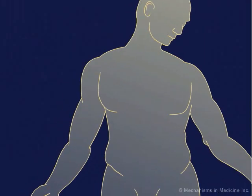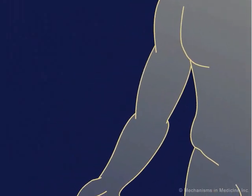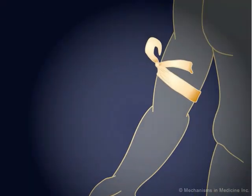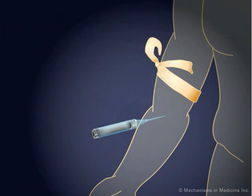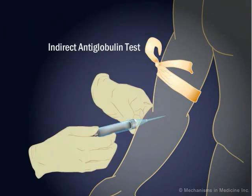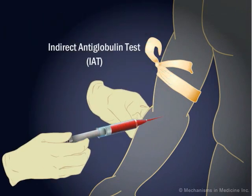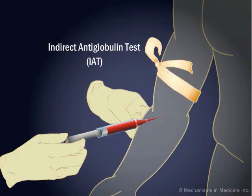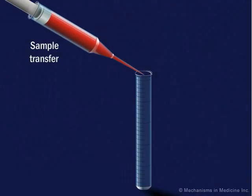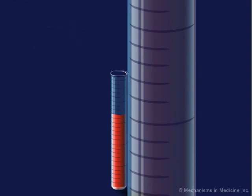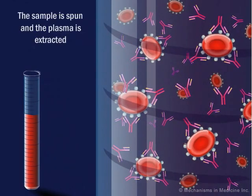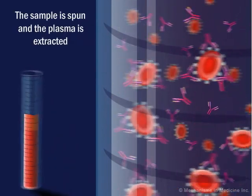To detect whether human anti-red blood cell antibodies are present in the plasma of a patient, an indirect antiglobulin test, or IAT, is used. Unlike the DAT, which relies on the red blood cells in the sample, the IAT only deals with the extracted plasma.